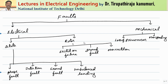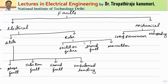Let us see what are the different types of faults that happen. Faults can be broadly classified into two categories: electrical type and mechanical type. The mechanical type involves the loss of the prime mover — for example, in a steam power plant, the steam input is decreased suddenly, or in a hydroelectric power plant, the water supply is decreased. These are cases of loss of the prime mover.